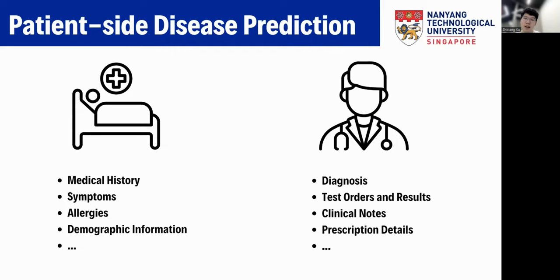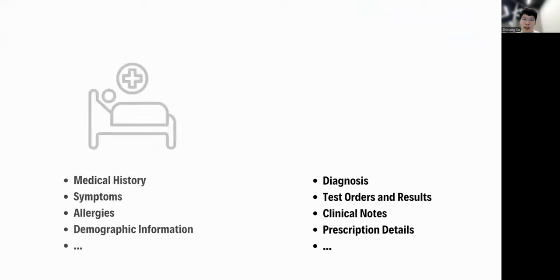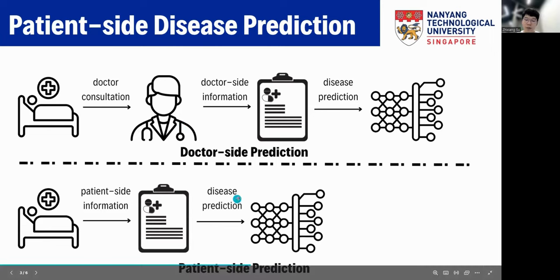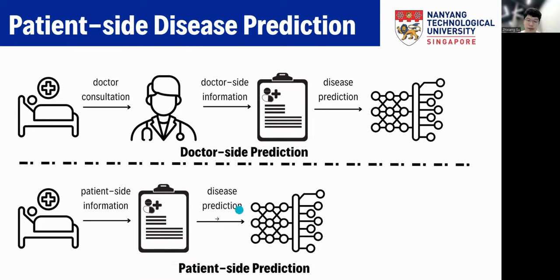In our work, we like to use the patient side to make disease predictions. For a doctor-side prediction, we have a patient who consults a doctor, and the doctor collects doctor-side information and makes predictions. But common prediction models are not as accurate as doctors, because doctors have expertise and knowledge and are more reliable and convincing. So if a patient has already seen a doctor, results from the model are not helpful because the doctor can make the diagnosis. Therefore, we would like to create a new type of model to let the patient know about their own situation without a doctor, which we call patient-side prediction.